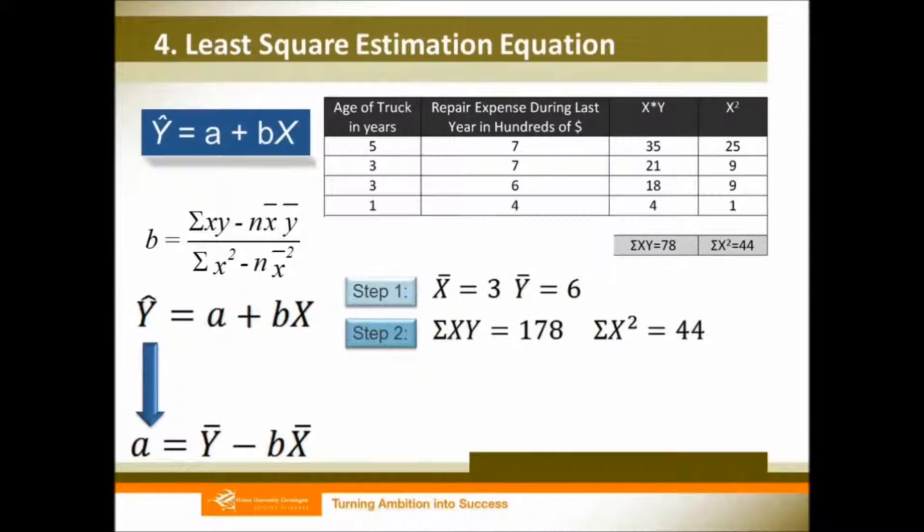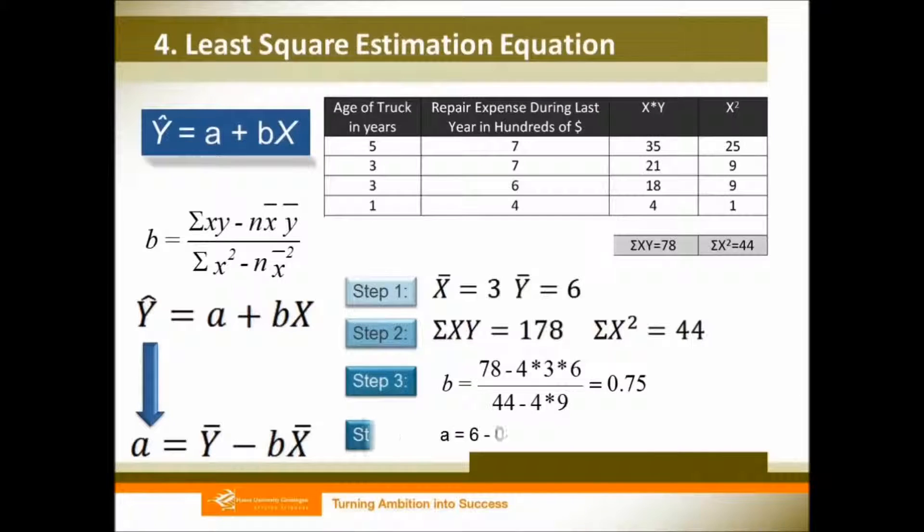We replace all the signs with our values and we get b equals 0.75. After you know your b, you can come to your a. So your a will be 3.75.